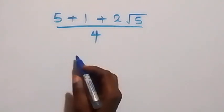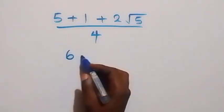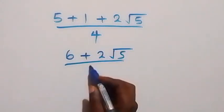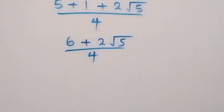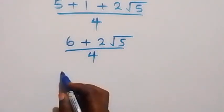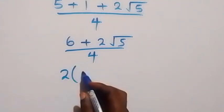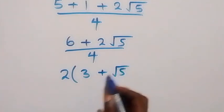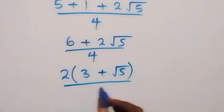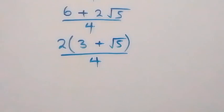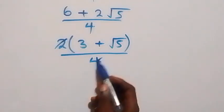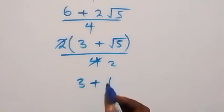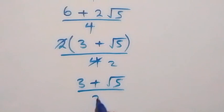Here we have 5 plus 1 plus 1 equals 6, wait — 5 plus 1 is 6, then plus 2 root 5 over 4. From here, 2 is common so we factor 2 out: we are left with 3 plus root 5 in brackets, divided by 4, and 2 into 4 gives 2. So what we have left is 3 plus root 5 over 2.